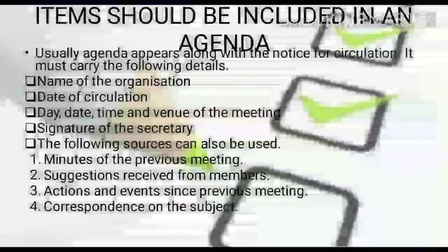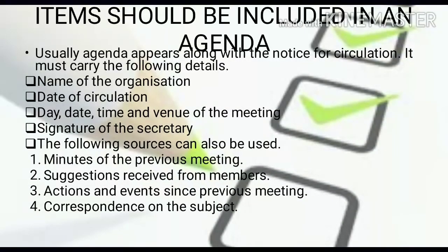Usually an agenda appears along with the notice for circulation, and it must carry the following details. The first is the name of the organization. Before the meeting, a notice is circulated among the members, and the agenda appears along with that notice. The agenda must include the name of the organization, the date of circulation of the notice, and the day, date, time, and venue of the meeting.